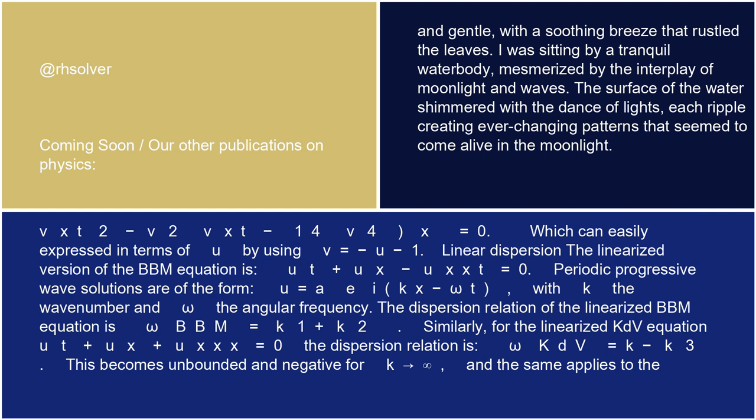Linear dispersion: The linearized version of the BBM equation is ut + ux - uxxt = 0. Periodic progressive wave solutions are of the form u = a·e^(i(kx - ωt)), with k the wave number and ω the angular frequency.